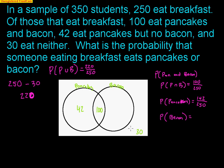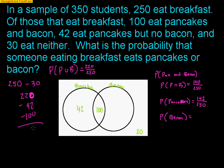They might only like bacon, they might not like pancakes, they might like both, but regardless, 220 kids like one or the other. Make sure that you understand that 'or' means pancakes or bacon or even both, because the 100 kids that like both are going to raise their hand too. So if I take 220 and subtract 42 and then subtract 100, I'm left with 78.